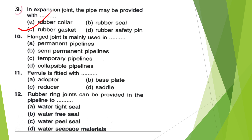Flange joint is mainly used in — Permanent pipelines, Semi-permanent pipelines, Temporary pipelines, or Collapsible pipelines? The answer is option C — Temporary pipelines.